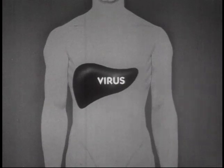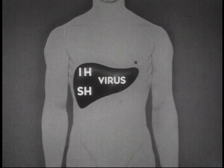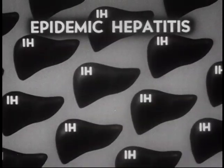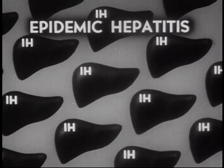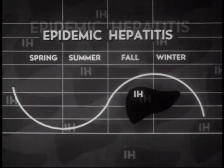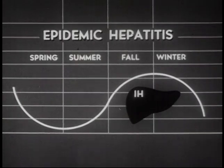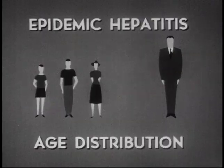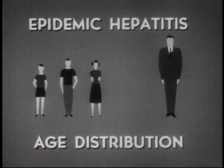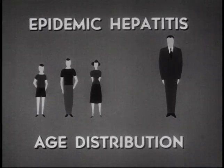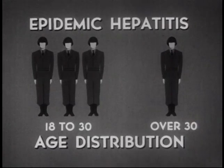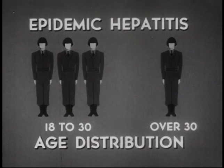The infecting virus has two forms: IH and SH. The IH virus causes epidemic hepatitis. Epidemic hepatitis has a seasonal distribution. In civil life, epidemic hepatitis is more common in the younger age groups, especially between the ages of 8 and 14. In the armed forces, it is also more common in the younger age groups.